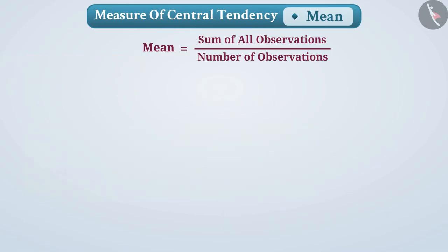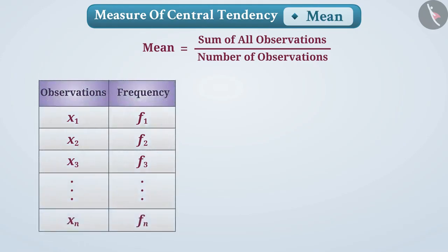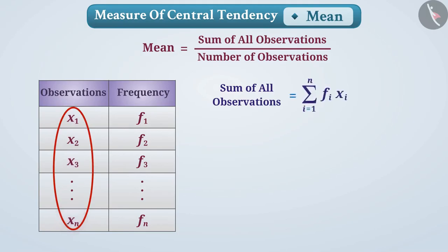Now consider that in observations, frequency of X₁ is f₁, X₂ is f₂, X₃ is f₃, and similarly X_n is f_n. Then we can get the sum of all observations in this way.